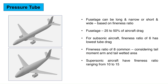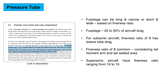In order to accommodate a specific number of passengers, the fuselage can be long and narrow or, conversely, short and wide. As the fuselage contributes approximately 25% to 50% of an aircraft's total drag, it is especially important to ensure that it has a low drag shape — this is where the fineness ratio comes into play. In the subsonic range, a fineness ratio of 6 is said to have the lowest tube drag. A shorter fuselage also means a smaller tail moment arm and hence larger tail surfaces which increase drag. Therefore, a fineness ratio of 8 is common for such fuselages. In case of supersonic designs, the fineness ratio is around 10 to 15.